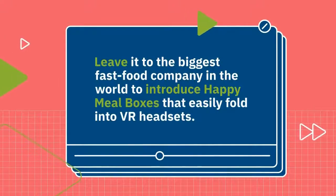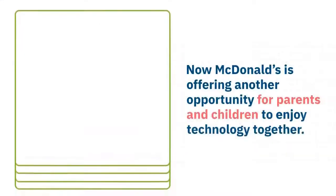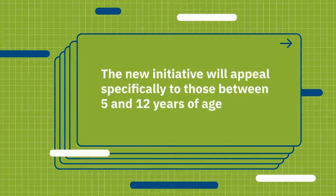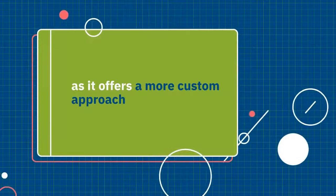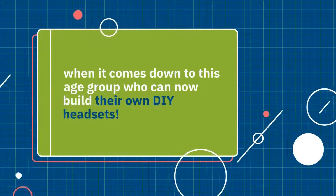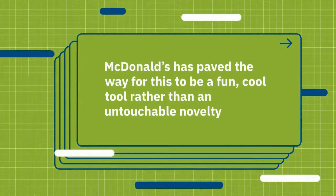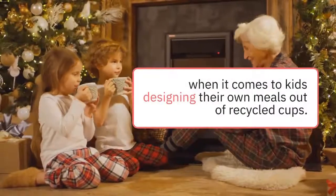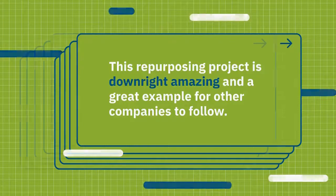Leave it to the biggest fast food company in the world to introduce happy meal boxes that easily fold into VR headsets. It does this with Google Cardboard, a VR experience offered on their site by the search engine giant. Now McDonald's is offering another opportunity for parents and children to enjoy technology together. The new initiative will appeal specifically to those between 5 and 12 years of age as it offers a more custom approach when it comes down to this age group who can now build their own DIY headsets. McDonald's has paved the way for this to be a fun, cool tool rather than an untouchable novelty when it comes to kids designing their own meals out of recycled cups. This repurposing project is downright amazing and a great example for other companies to follow.